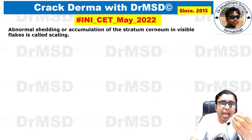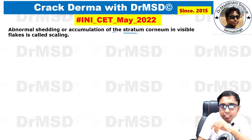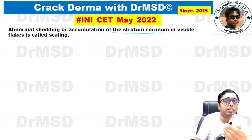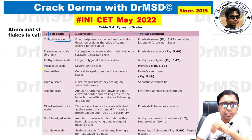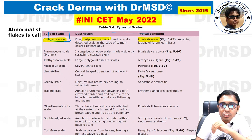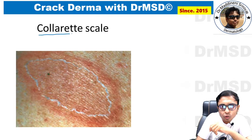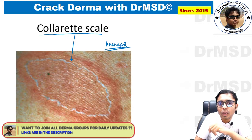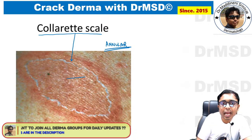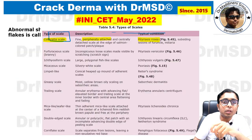What is a scale? The abnormal shedding or accumulation of the stratum corneum in visible flakes is called scaling. Usually the stratum corneum when it sheds off from the body it will not be visible, but in certain diseases it will be visible in the form of scaling. Collarette scale is present in Pityriasis rosea — a peripherally attached scale with a centrally detached center.